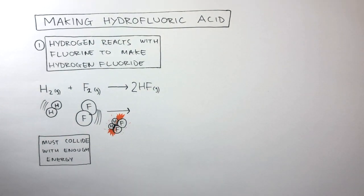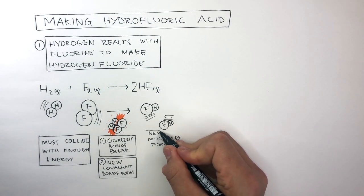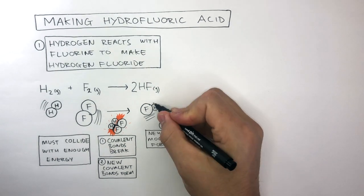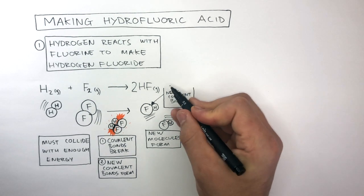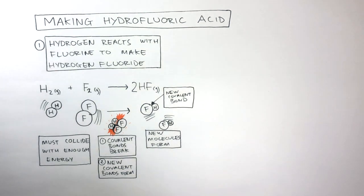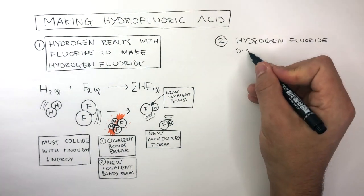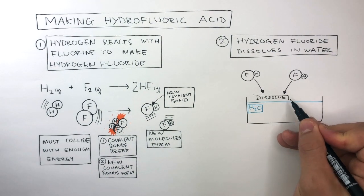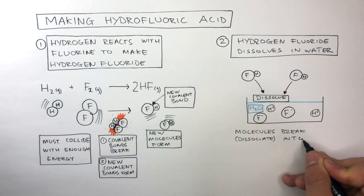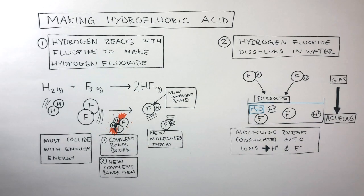When the hydrogen and fluorine molecules collide, their covalent bonds break and new covalent bonds form, creating hydrogen fluoride molecules. There is a new covalent bond between the hydrogen atom and the fluorine atom, which tells us a chemical reaction has taken place since the reactants are different from the products. The second process is a physical one: hydrogen fluoride dissolves in water. The molecules dissociate into ions — H⁺ and F⁻ — so hydrogen fluoride gas dissolves in water to become aqueous hydrofluoric acid.